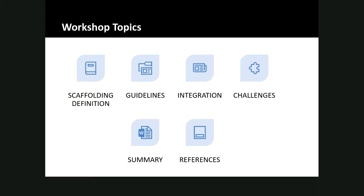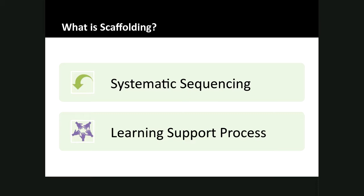So first of all, let's discuss what scaffolding actually is. The social context of learning scaffolding influences important skills like constructive meaning making and self-regulation of learning. Through the process of scaffolding, we can help students develop the skills to become self-regulated learners. Scaffolding is two-part: the first part is the systemic sequencing of prompted content, materials, tasks, and instructor and peer support to optimize learning, and a process through which students are given support until they can apply new skills and strategies independently.